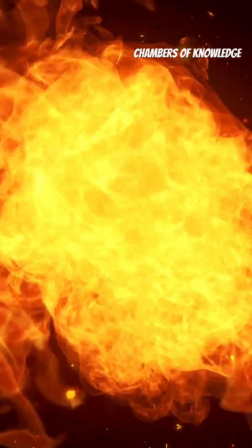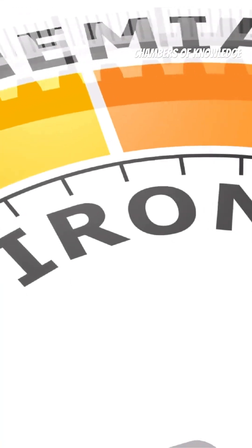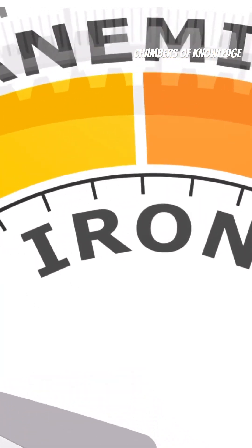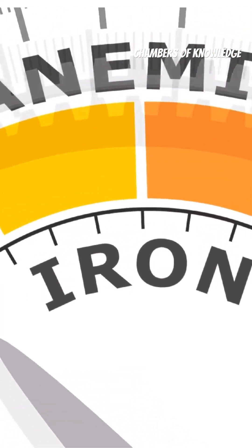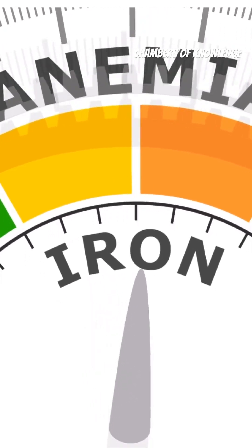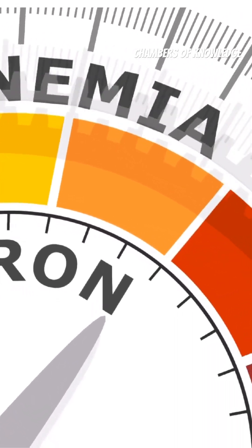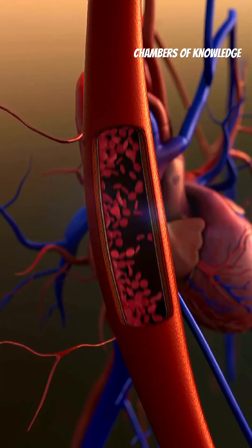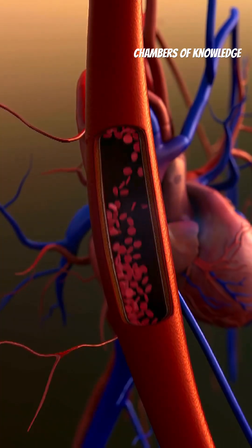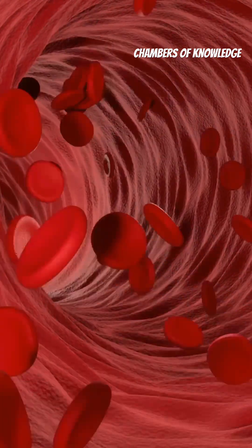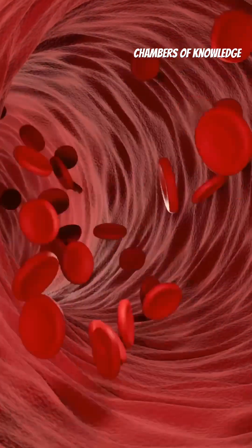Hemolysis is known to lead to anemia, a condition that develops when there is a low amount of red blood cells in the body. There are two types of hemolysis: extravascular hemolysis and intravascular hemolysis.